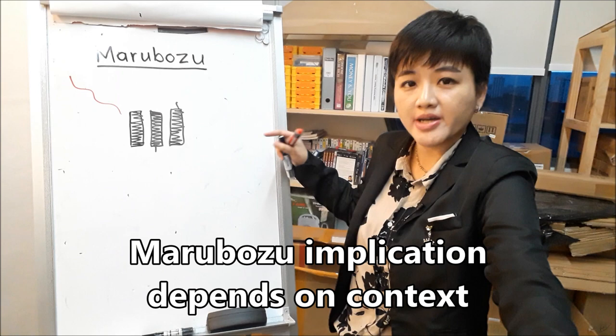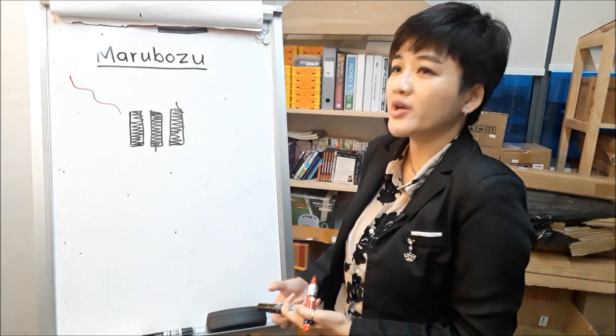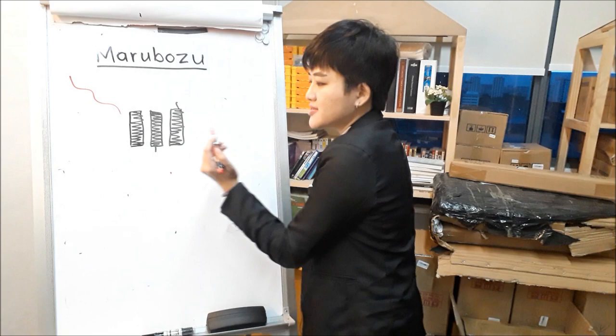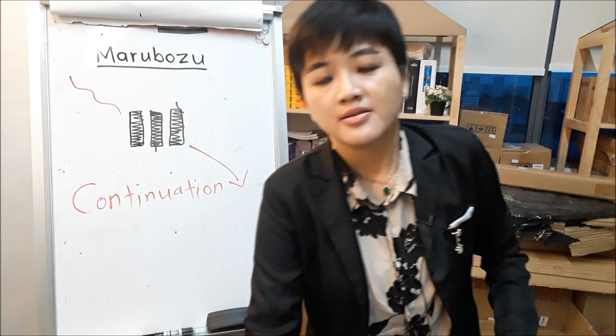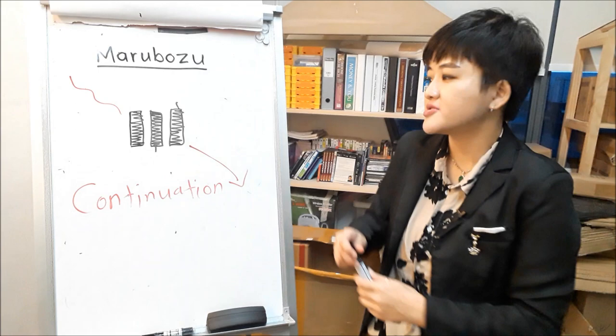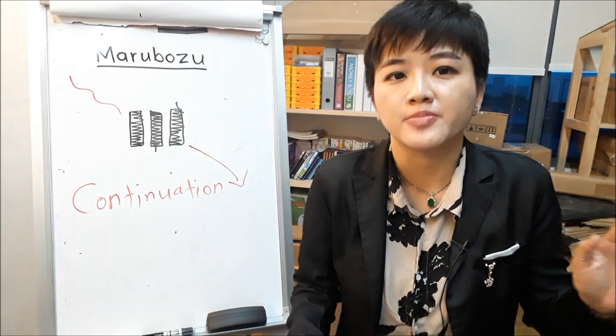For the black Marubozu, it's the same thing — it just applies to a bearish trend. When you have a bearish trend and you see any of these Marubozu patterns near the start when the trend hasn't been going on for a long time, it becomes a continuation pattern — price is going to continue to go down. But if it forms at the end of a trend that has been going on for a long time, with a sharp drop and this pattern, it tells you the downtrend has ended. Hence, please take your profit and exit.